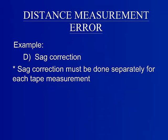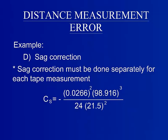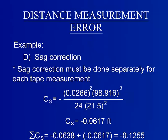Much like temperature correction, sag correction must be calculated separately for each section. This is because the equation calls for the unsupported length segment. The two length segments measured are different, so the correction cannot just be doubled and must be calculated separately. The combined error from sag in both segments is negative 0.1255 feet.